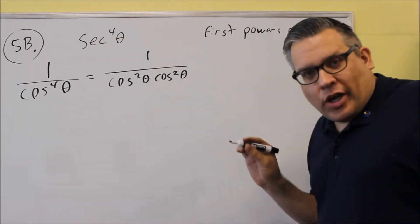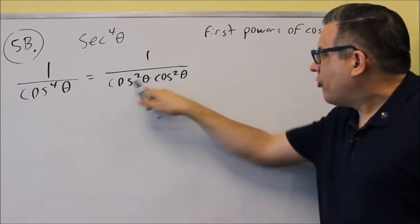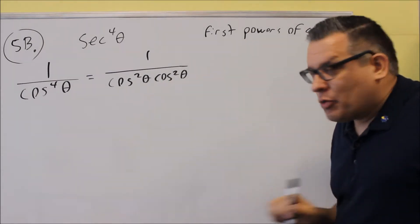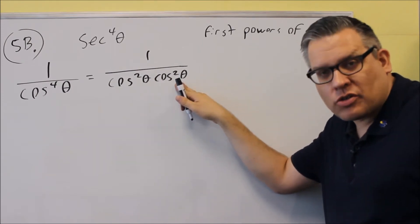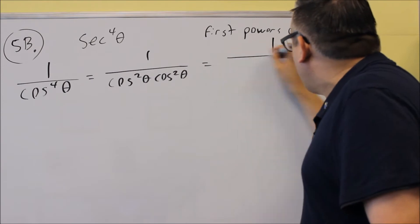We want to write it this way because then we're going to use a power-reducing formula for each one of these individually. We have to use one for cosine squared, the same one we'll use again for the other cosine squared. And all these will be on the bottom of a fraction.